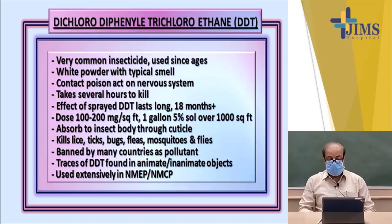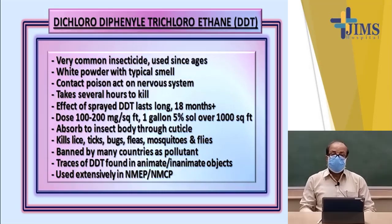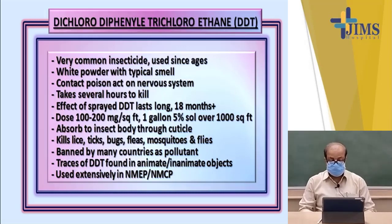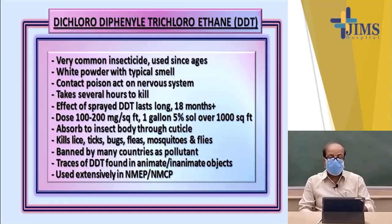The dose is 100 to 200 milligrams per square foot, or one gallon of 5% solution can be sprayed over 1,000 square feet. It absorbs into the insect body through the cuticle and kills lice, ticks, bugs, fleas, mosquitoes, and flies. However, it has been banned because it is found to be a biological pollutant, with traces found in animate and inanimate objects.